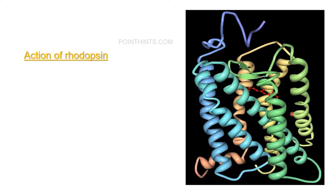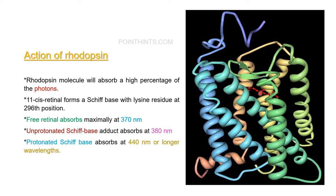Regarding the action of rhodopsin: the opsin molecule is a 7-transmembrane family receptor protein because it has a 7-helical structure. The retinal present within the opsin molecule has an aldehyde group and is in the cis form. If there is no attachment within the opsin molecule, the retinal is free and absorbs light at a wavelength of 370 nanometers. If it is attached to the opsin molecule at the 296th position with a lysine molecule, this attachment is called a Schiff base.